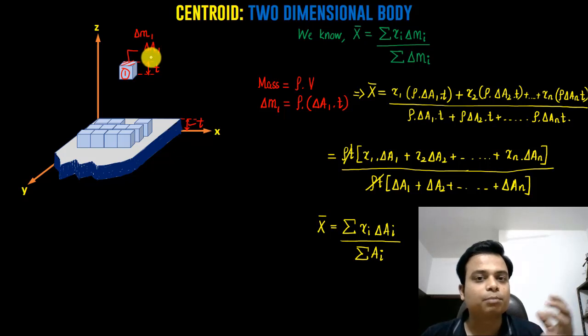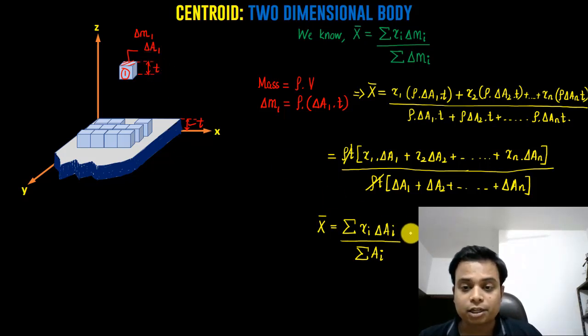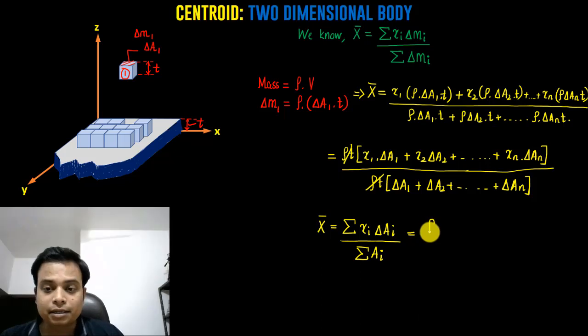In the same form, you can also write Ȳ = ∫y·da / ∫da. This expression is what you refer to as the first moment of area.